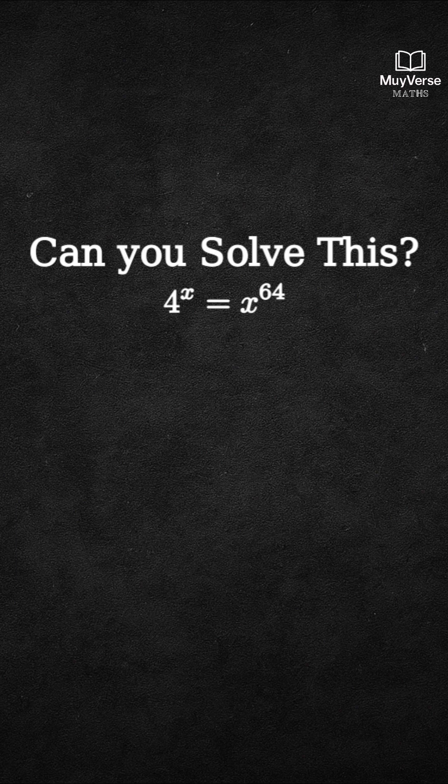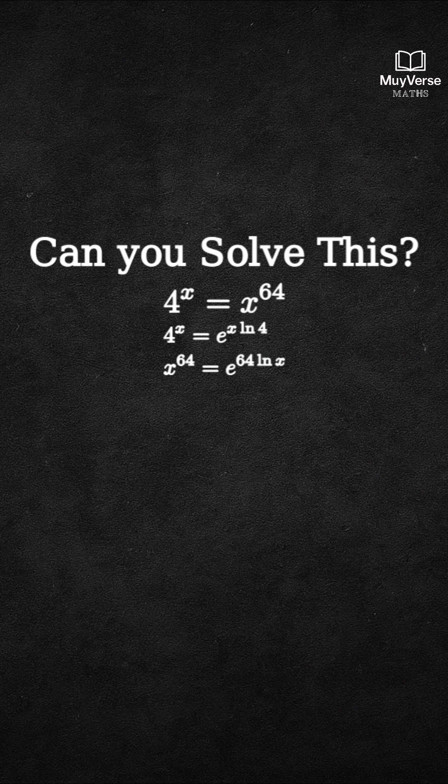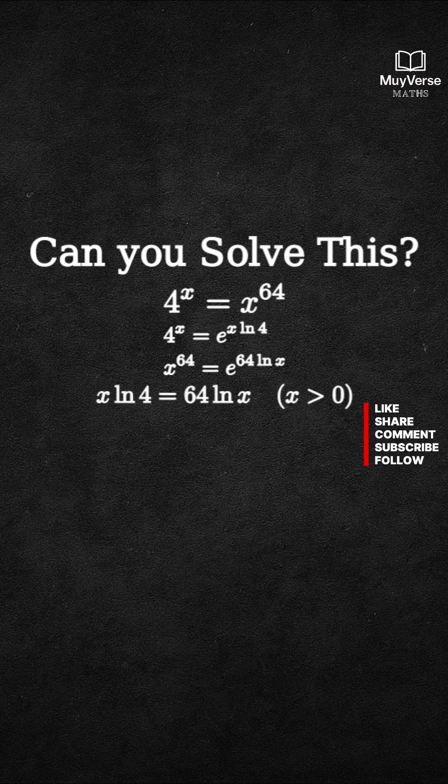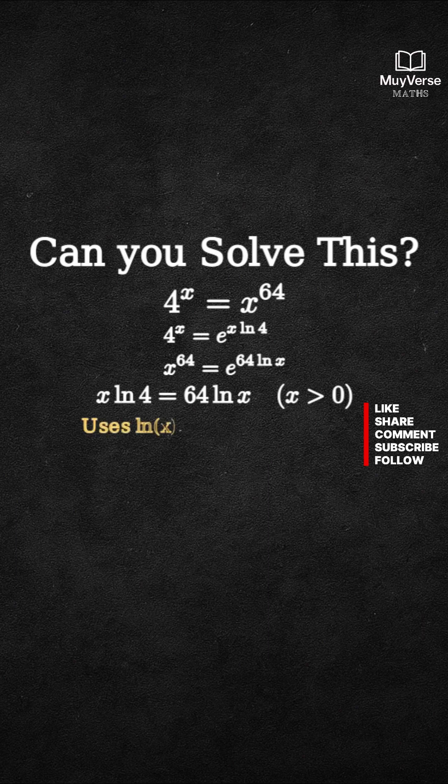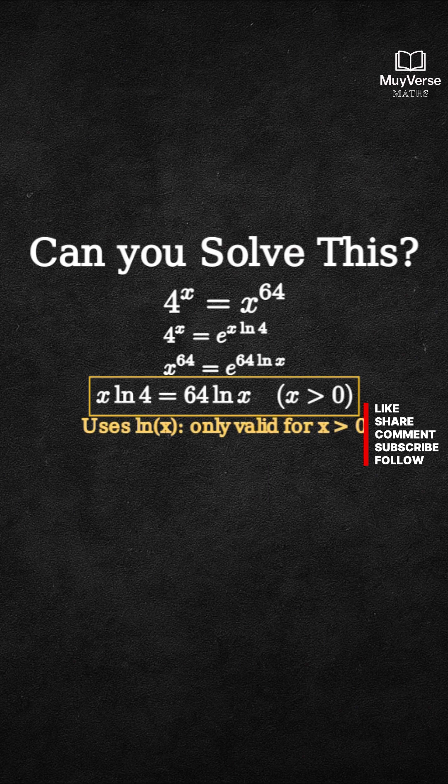Step 1. Rewrite both sides as exponentials with natural logs. 4^x equals e^(x ln 4). x^64 equals e^(64 ln x). So for x positive, the exponents must match: x ln 4 equals 64 ln x. Remember, this step uses ln of x, so it only covers x greater than 0.